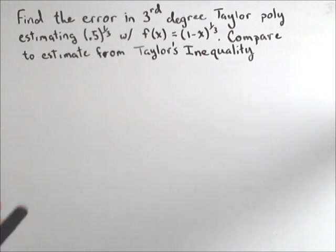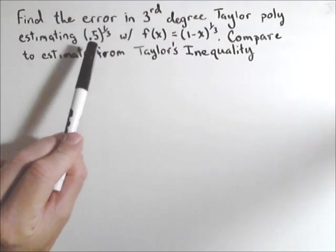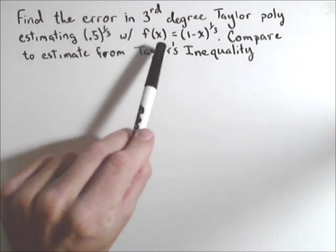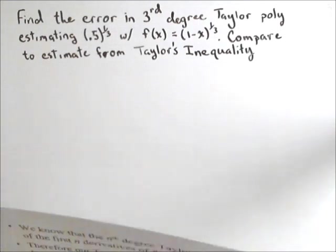In this problem, we're going to look at finding the error in a third-degree Taylor polynomial for estimating 0.5 to the one-third using the function (1-x)^(1/3), and we're going to compare it to the estimate from Taylor's inequality.